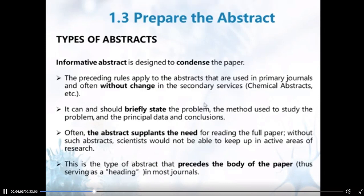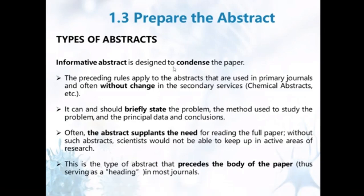There are usually two types of abstracts. One is the informative abstract, which is designed to condense the paper. For informative abstracts, the preceding rules are applied to abstracts used in primary journals, or often without change in secondary sources like chemical abstracts.